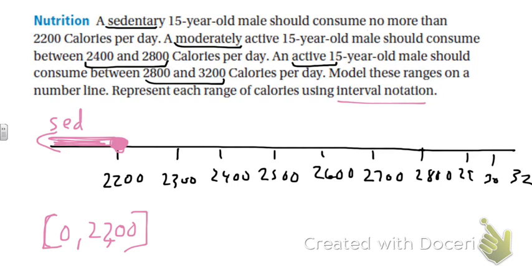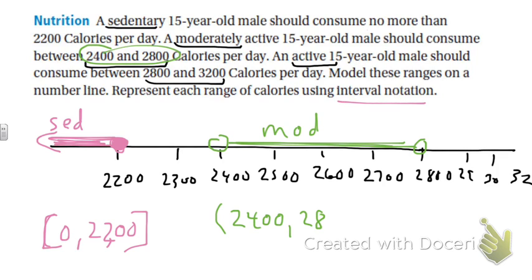Then let's go to moderately active - that's 2400. It says between, so it doesn't say inclusive, so we're going to go between 2400 and 2800. That's moderate, so 2400 to 2800. And then the last one is the active one - they get to have all the fun because they're active, they can eat more. 2800 to 3200. So again, it says between, so I'm thinking that's an open circle to an open circle. The biggest thing is you understand where these all go as ranges.